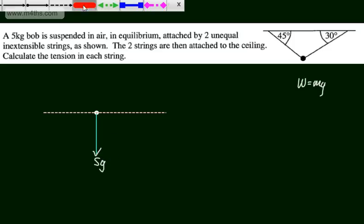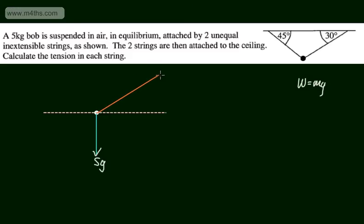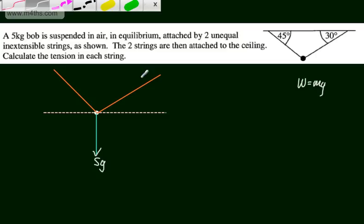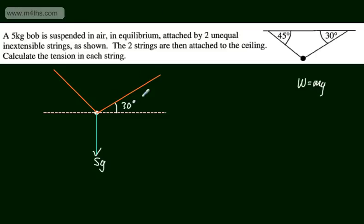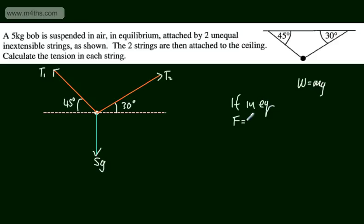We have two strings. Using alternate angles, if one string makes 30 degrees with the ceiling it makes 30 degrees with the horizontal, and the other makes 45 degrees. I'll call these tensions T1 and T2. If in equilibrium, F equals MA gives zero — resolving upwards gives zero, resolving horizontally gives zero.